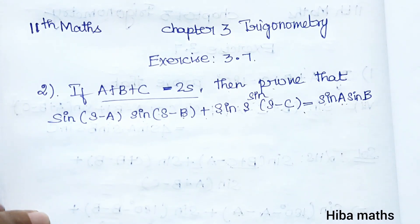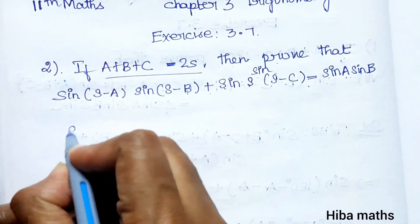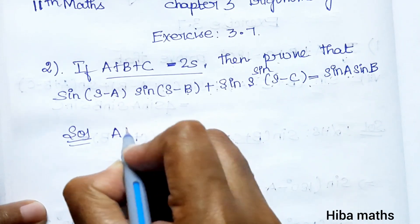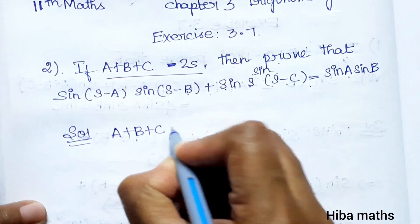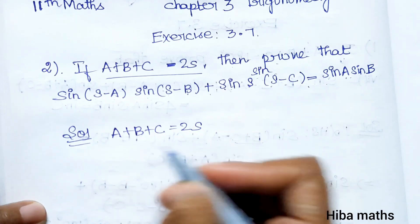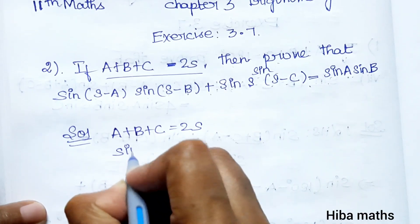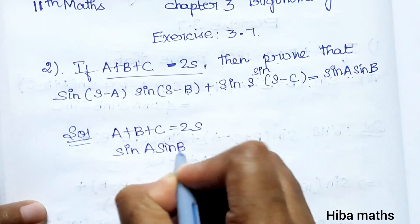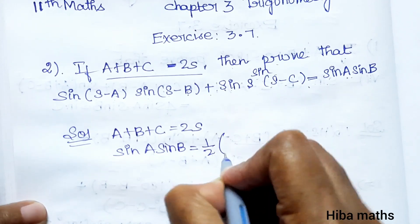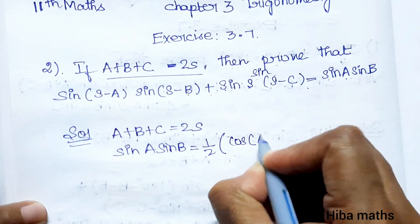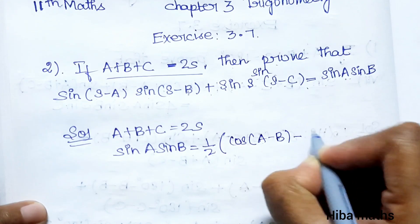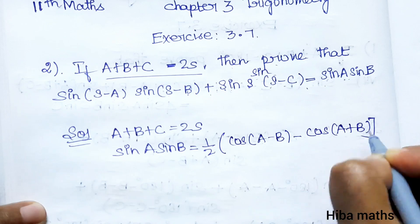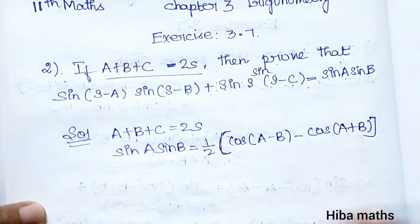This is RHS and this is LHS. In the solution, given conditions, we will solve LHS. First, we have a plus b plus c is equal to 2s. The identity we will use is: sin(A)sin(B) is equal to 1/2 times [cos(A minus B) minus cos(A plus B)].